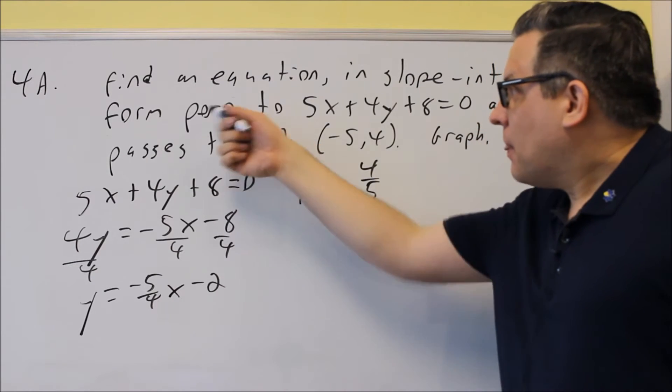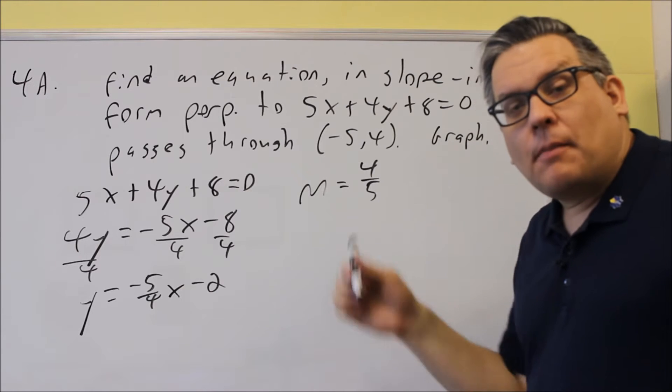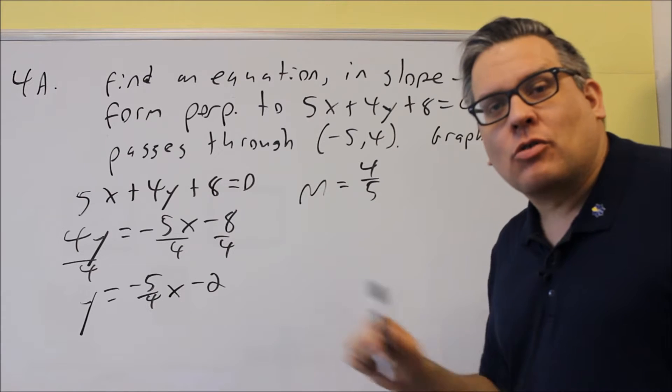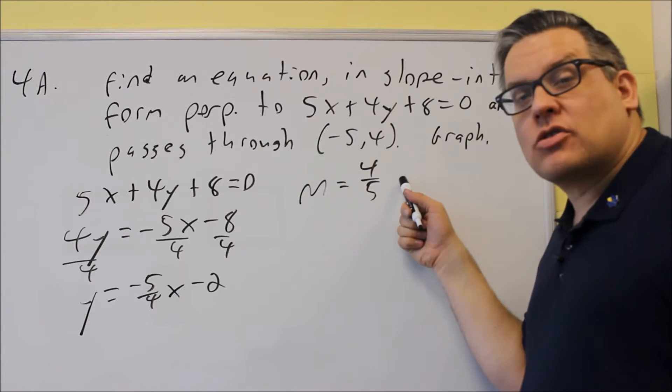That tells us that the slope we want to use is going to be 4 fifths. Now, if the question said parallel to, parallel means you're going to use the same slope. Perpendicular is opposite reciprocal slope, so we've got to use 4 fifths.